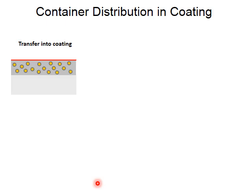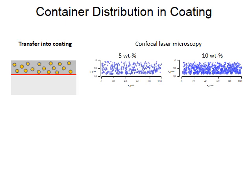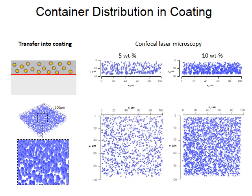In the next step, we transfer these capsules into a waterborne organic coating. It is important that our capsules are uniformly distributed in the coating and not aggregated. Using confocal scanning laser microscopy, I could show that this is indeed the case, as can be seen in these vertical profiles and other perspectives of the capsule-doped coatings.